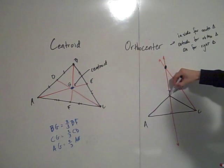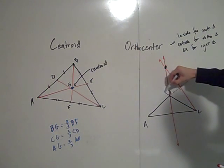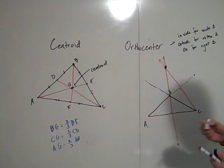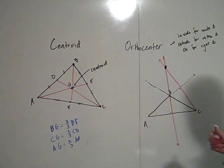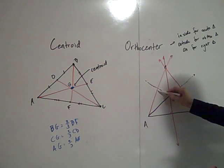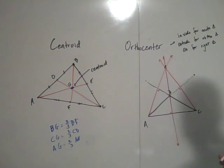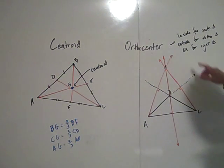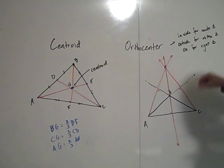The same has to happen on the other side — you have to extend the leg CB and then drop the perpendicular. You can see that the orthocenter lies outside the triangle for an obtuse triangle. For the right triangle, the orthocenter is on the triangle — it's at the vertex of the right angle.